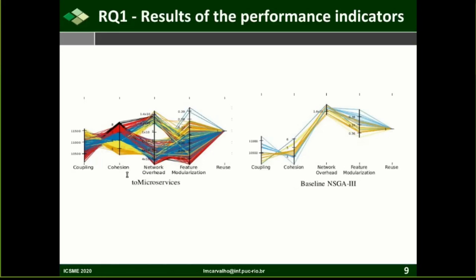µTosca was configured to generate five and ten microservices, influencing the granularity level of each microservice. Our results show that µTosca performed better than random search and both baseline approaches. In this plot, it is visible that µTosca produces more balanced solutions — the blue lines in the plot show a better trade-off among the five criteria, with average values of coupling, cohesion, network overhead, and feature modularization for most solutions. These results confirm that optimizing only coupling and cohesion, as done by the baseline, is not sufficient to also optimize network overhead and feature modularization.